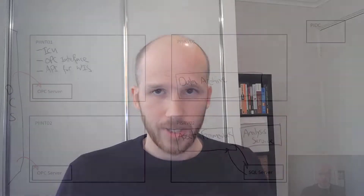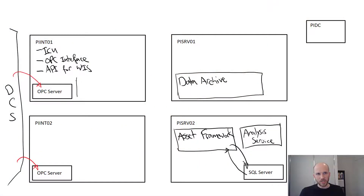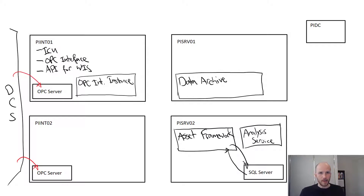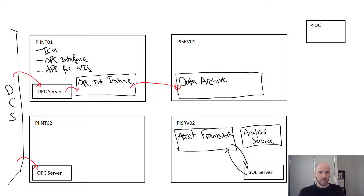Now we've got everything installed. In this video we'll configure an interface instance to connect to the data archive and the OPC server. An interface instance is essentially a service running under an account of our choosing on a machine. When configured and started up, the interface will make connections to the data archive and to the OPC server and get data flowing.